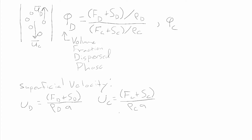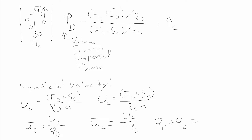We can relate superficial velocities to actual element velocities by allowing each phase to occupy only the volume it actually occupies, given by the volume fraction. The actual velocity of a differential element of the dispersed phase, u_D bar, equals the superficial velocity U_D over phi_d. The actual velocity of a differential element of the continuous phase equals U_C over one minus phi_d — because the volume fractions of the two phases must add to one.